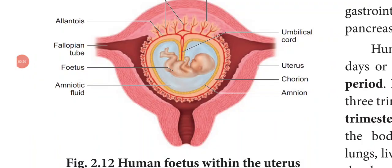Good morning students. Chapter 2: Human Reproduction. In the last class we discussed about the maintenance of pregnancy and embryonic development. We have seen about the extra embryonic membranes, namely yolk sac, allantois, amnion and chorion. Their main function is to protect the embryo from desiccation, mechanical shock, and help in the absorption of nutrients and exchange of gases.